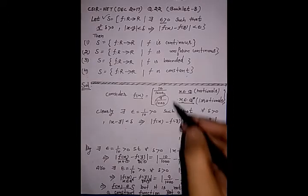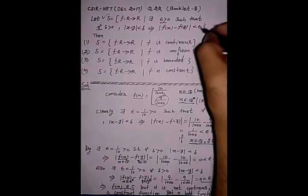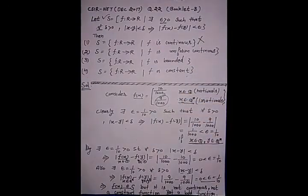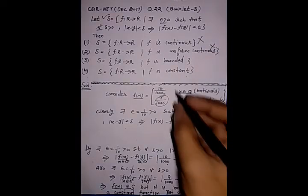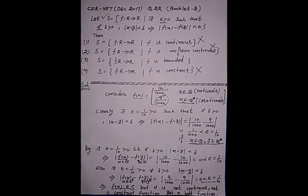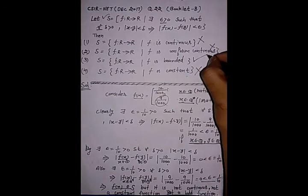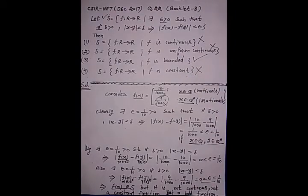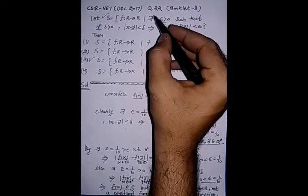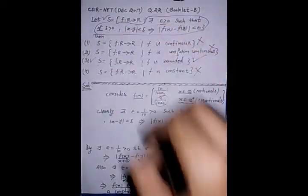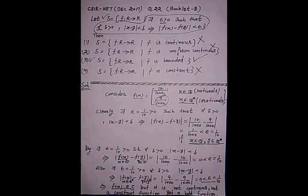Testing the options: F(X) is not a continuous function, as you can easily check. Therefore it is also not a uniformly continuous function. Since the two output values are different, it is not a constant function either. So we have to take only a single option — the correct answer is the third option, bounded. Be careful: this condition is not the condition of uniform continuity. Thank you.